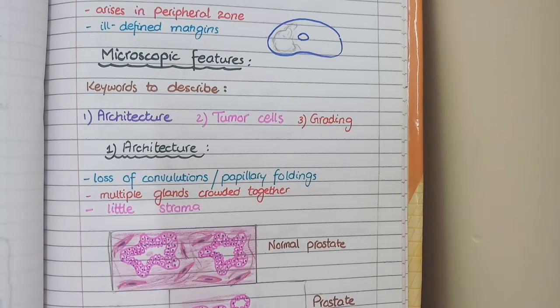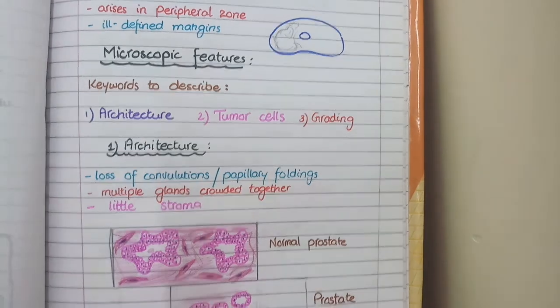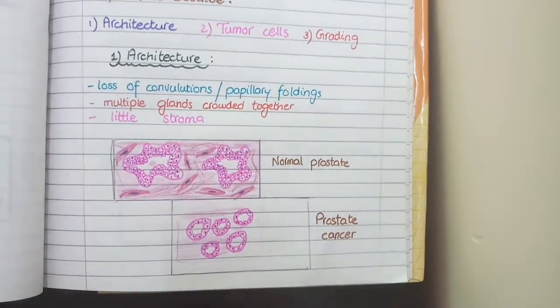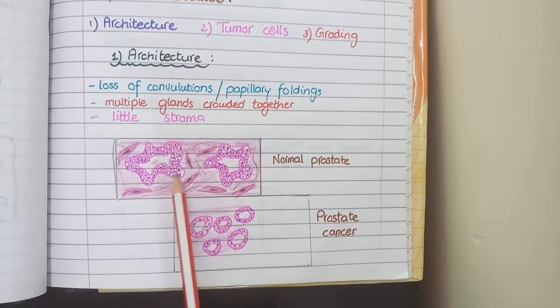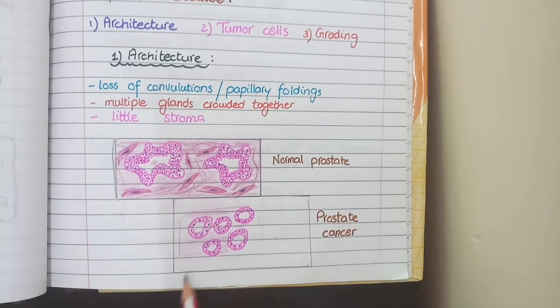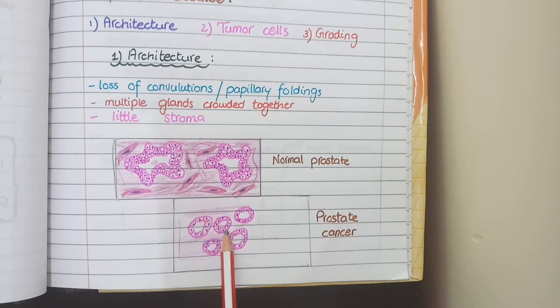So let's start with the architecture in prostate carcinoma. And for this, we will make the comparison with normal prostate gland. You know that normal prostate gland shows convolutions or finger-like projections called papillae. But in prostate cancer, these papillae or foldings are lost. As you can see here in this diagram, the glands do not have papillary foldings.